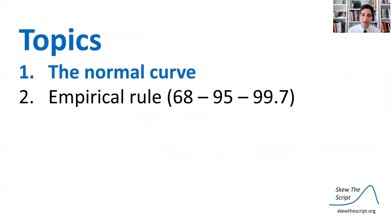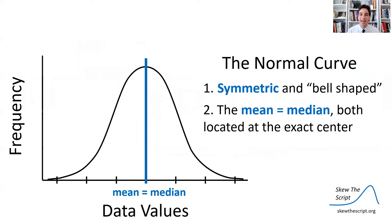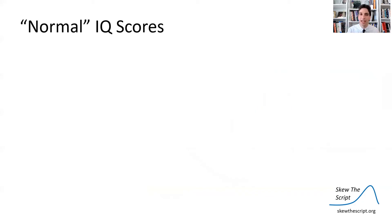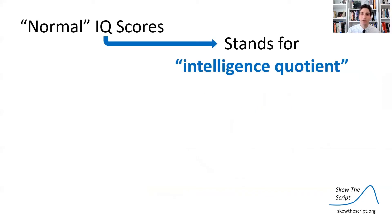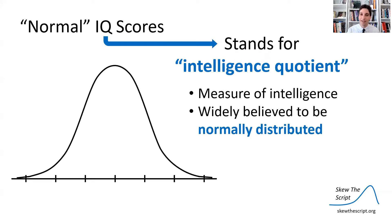First, let's talk about the normal curve. The normal curve is a distribution of data that is symmetric and bell-shaped. Because it's symmetric, the mean equals the median, and both are located at the exact center of the dataset. Most claim that IQ scores are normally distributed. IQ stands for the intelligence quotient — it's a measure of intelligence, and it's widely believed to be normally distributed in the population.